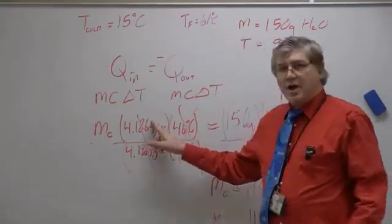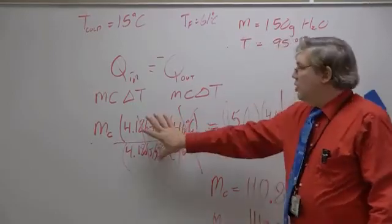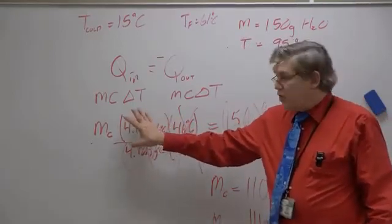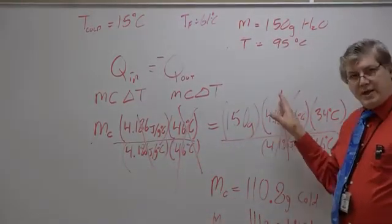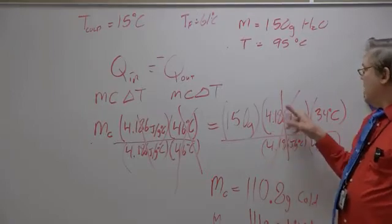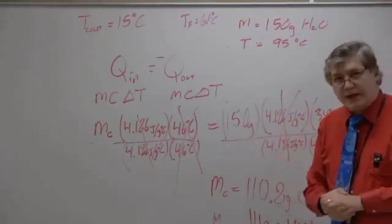then obviously you're not going to use 4.186. You'll use whatever number that is over here. And then you'll divide by it. You'll divide by it over here. But they won't cancel. They won't cancel. So this one will be the water. And the one underneath will be the metal or something like that.